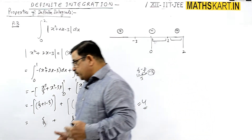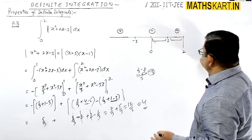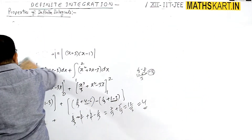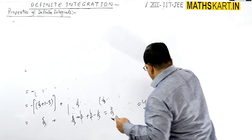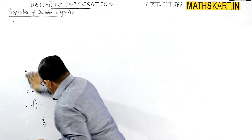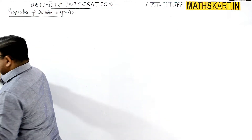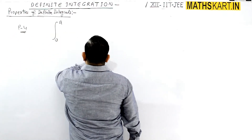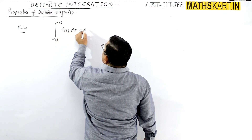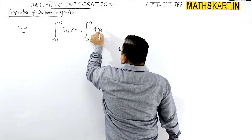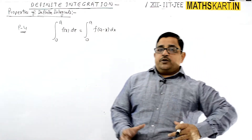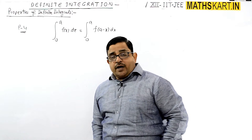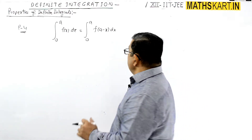Next we have Property 4, which is very important and has many results — generalized results too. We can learn them very comfortably. That is Property 4: the integral from 0 to a of f(x) dx can be written as the integral from 0 to a of f(a - x) dx.